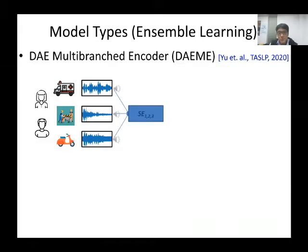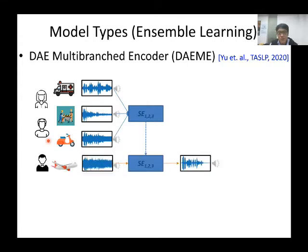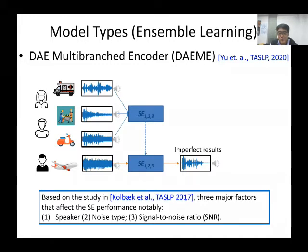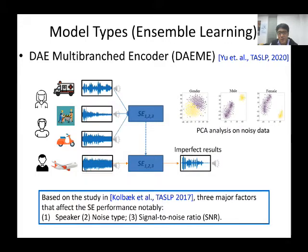For a speech enhancement system, we generally estimate the model using a training set. The trained model is then used to enhance testing speech. Because testing speech may be from a new speaker and unseen noise type, the mismatch between training and testing may result in poor speech enhancement performance. A previous study reports that three major factors notably affect speech enhancement performance: speaker, noise type, and SNR.